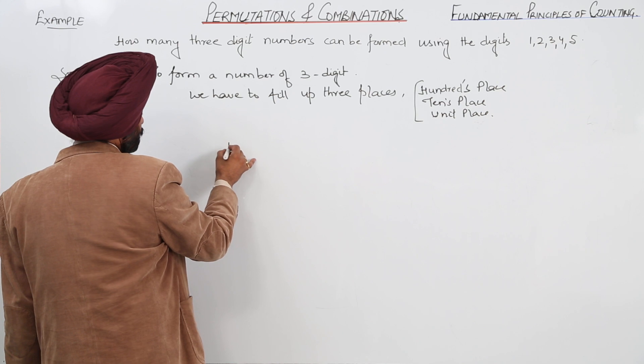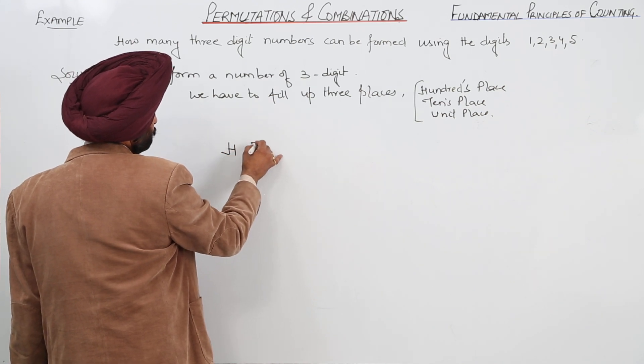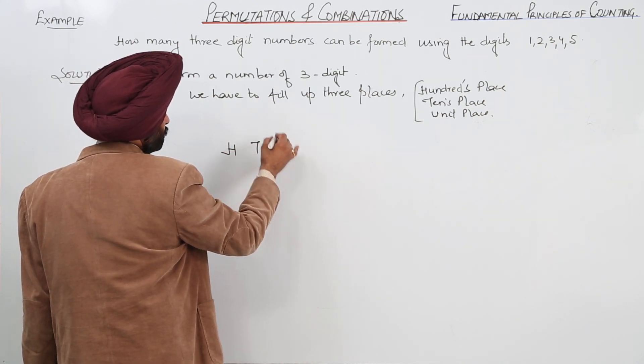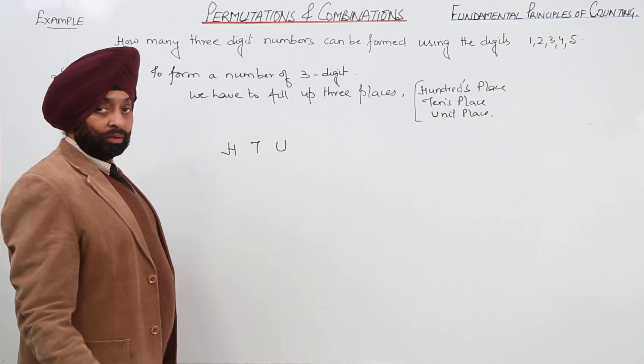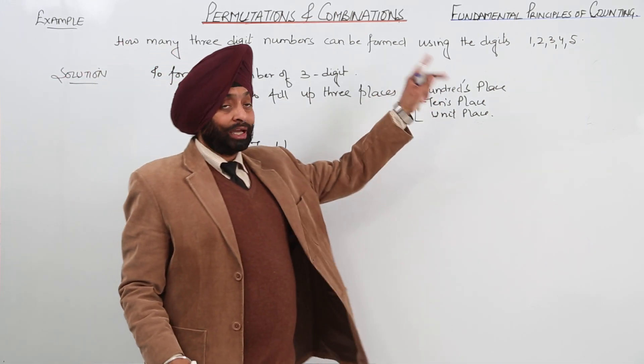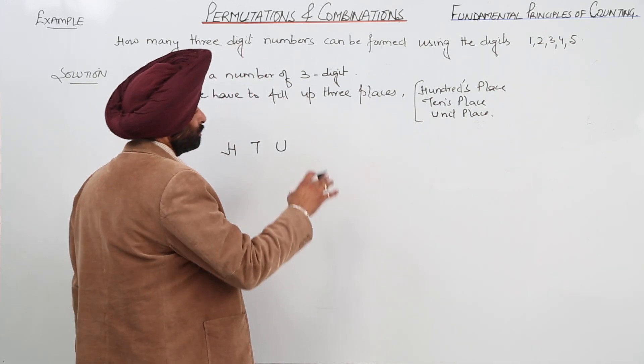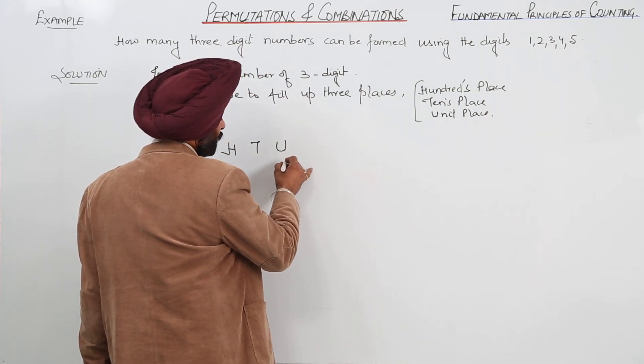So, just considering H for the 100th place, T for the 10th place and U for the unit place. Now, in the unit place, we can put all the 5 numbers. So, we can put all the 5 together.